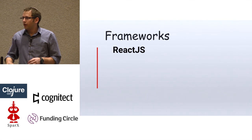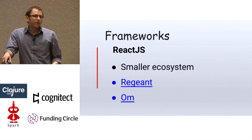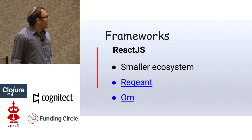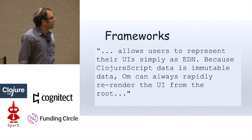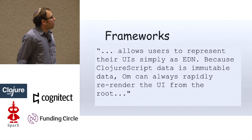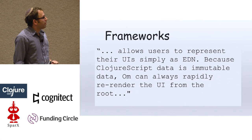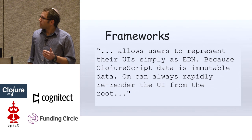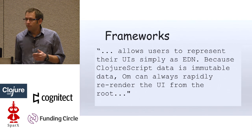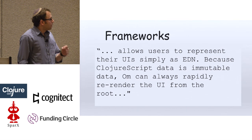React actually has two very good frameworks for ClojureScript. One of them is Reagent — I've never used it so I can't tell you how good it is. The second is Om. What Om does is allow users to represent UIs simply as EDN. Because ClojureScript data is immutable, Om can always rapidly re-render the UI from the root. So there's no need for clj->js conversions and no need for scope.$apply — you make a change in your data and you see it in the UI.